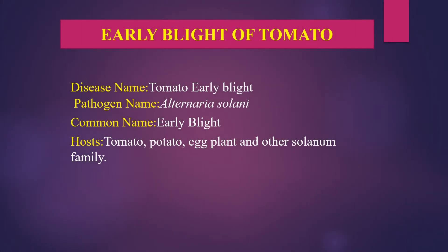Today, let us discuss the important topic of early blight of tomato. The disease name is tomato early blight. The pathogen name is Alternaria solani, and the common name is early blight.